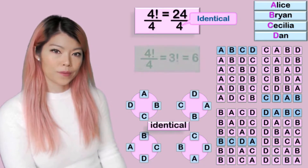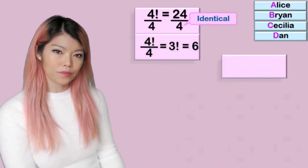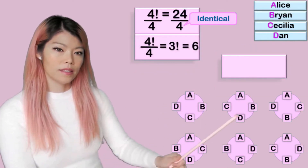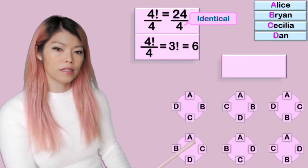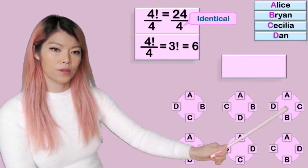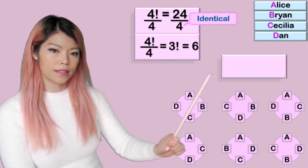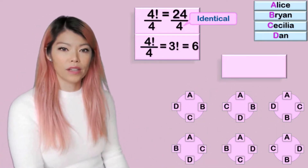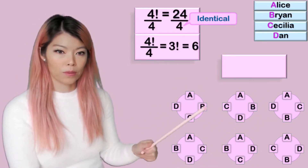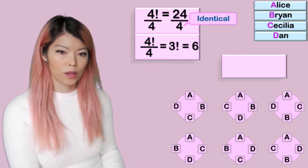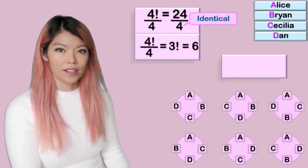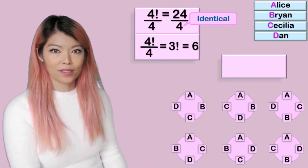Let's have a look. These are the only six arrangements that are different. Any other arrangement of four people in a circle will be a repetition of one of these. You can try it yourself to check.